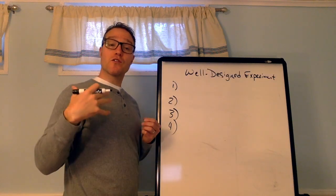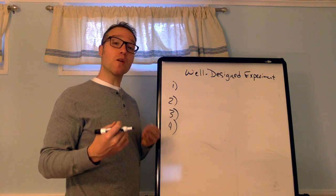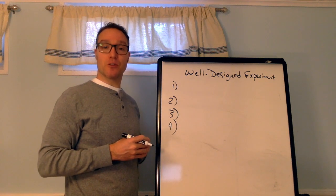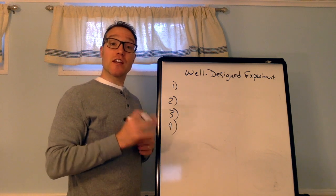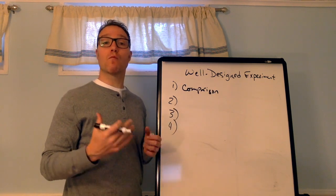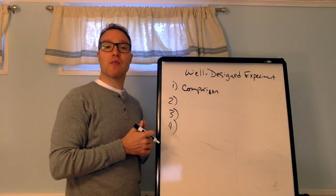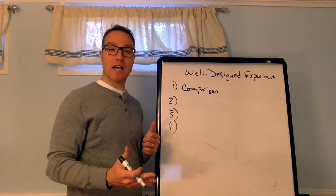So if our goal is to create a well-designed experiment, there are four principles that we try to adhere to. The first is comparison. You want to use a design that compares two or more treatments. You never want to do an experiment where everyone gets the same treatment and you don't compare it to anything.